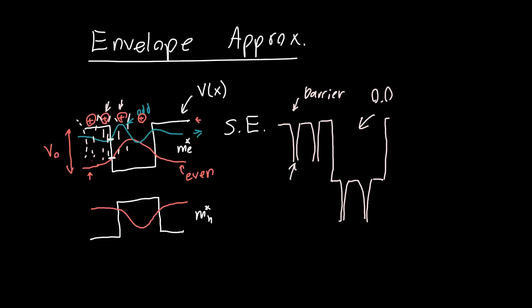We want a more elegant way of dealing with two potentials superimposed on each other: one due to the atoms in the crystal — assuming we're working in a semiconductor — and one due to macroscopic variations in the material, for example silicon versus germanium or aluminum gallium arsenide versus gallium arsenide.